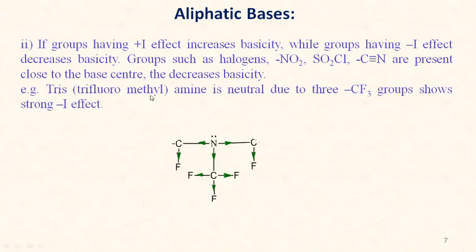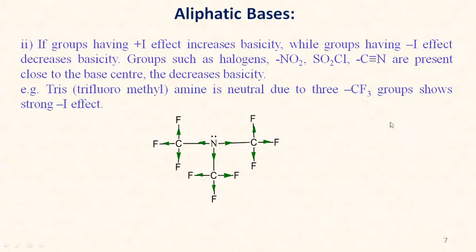Electron-donating groups increase basicity, while groups with −I (electron-withdrawing inductive effect) decrease basicity. For example, in tris(trifluoromethyl)amine, the three CF₃ groups — a total of nine fluorine atoms — show a strong electron-withdrawing inductive effect, making tris(trifluoromethyl)amine effectively neutral.